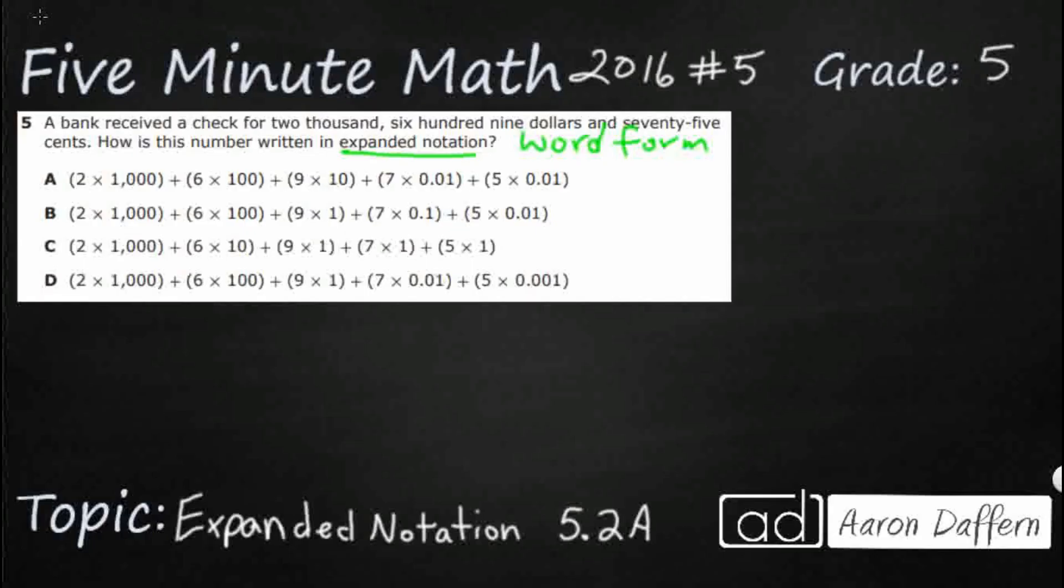So let's see if we can first at least figure out what this word form is. What I want to do is I want to translate that into standard form. So standard form is just numbers, just what we're used to. So it looks like we're going to go to the thousands place here. I'm seeing 2,000, so let's do this.